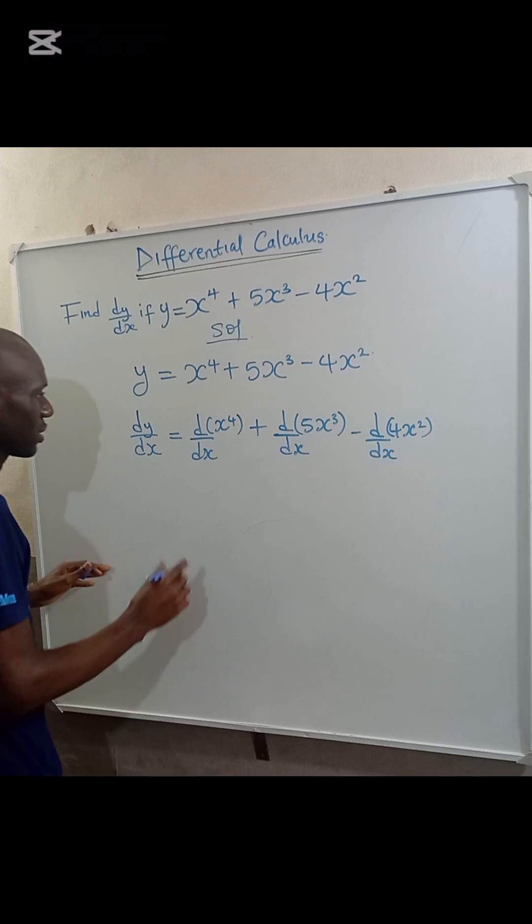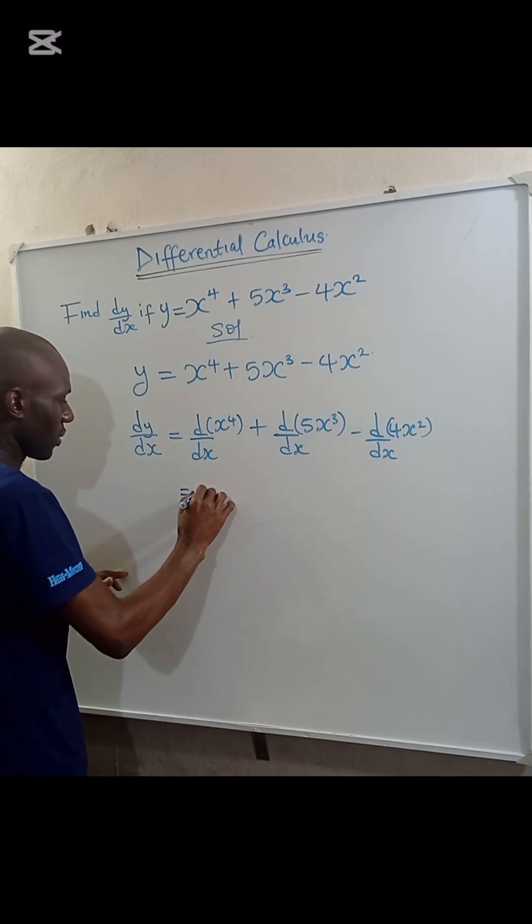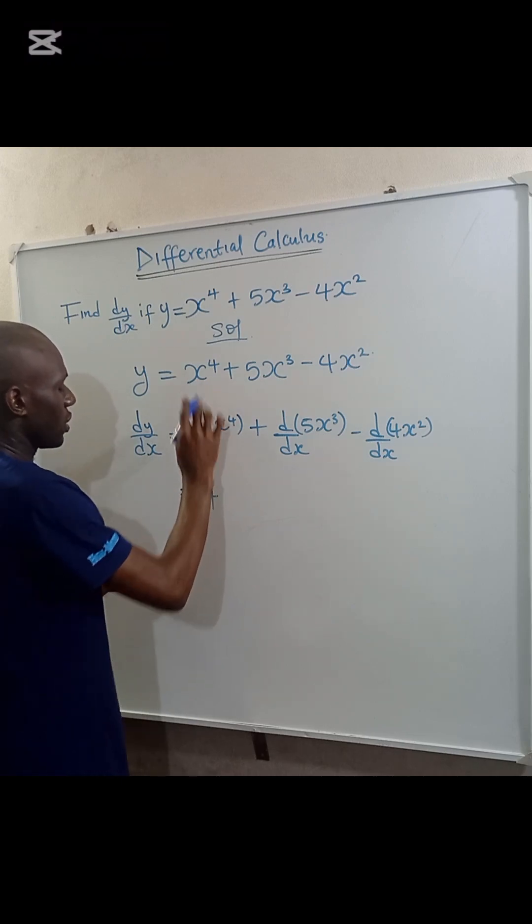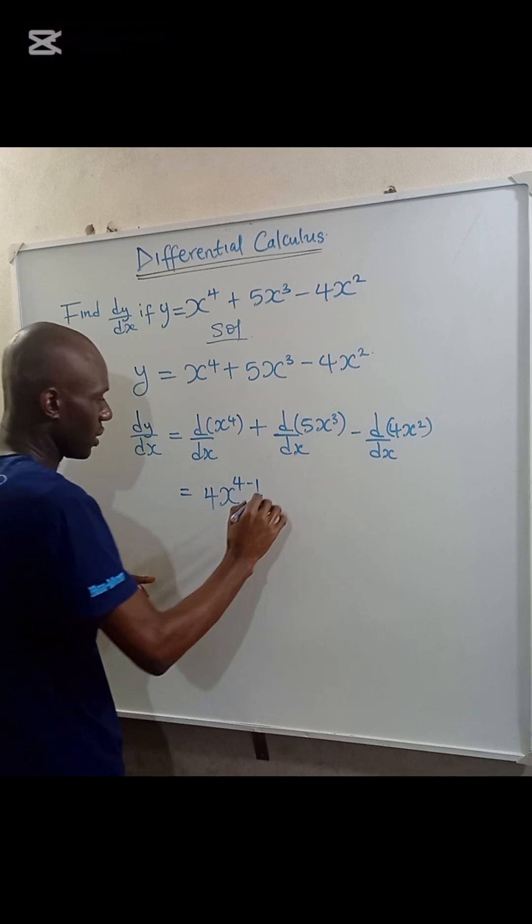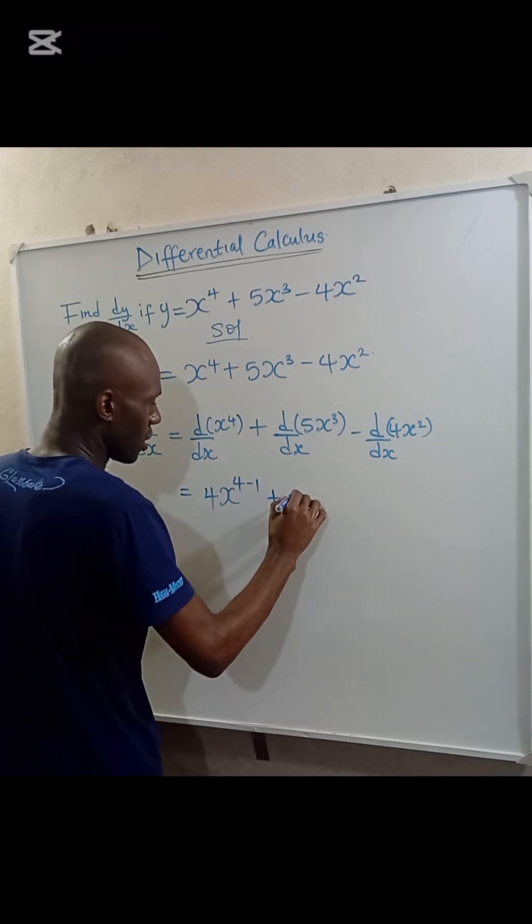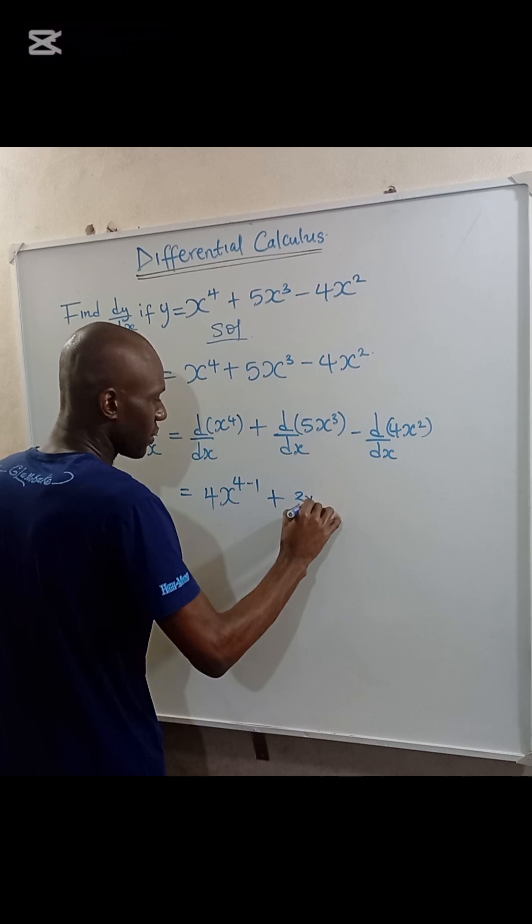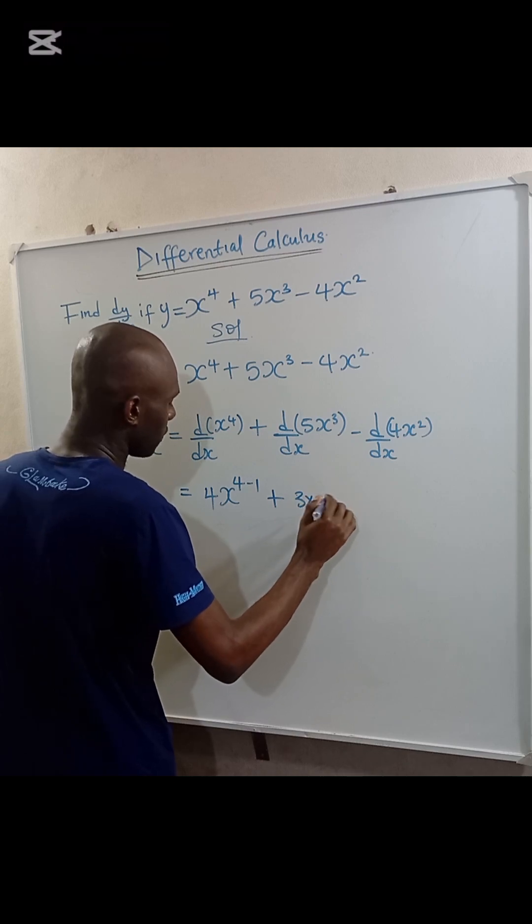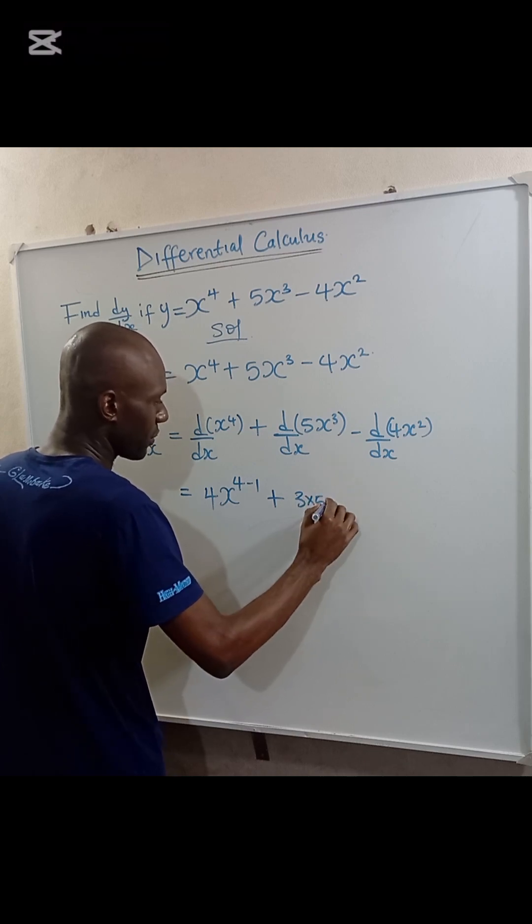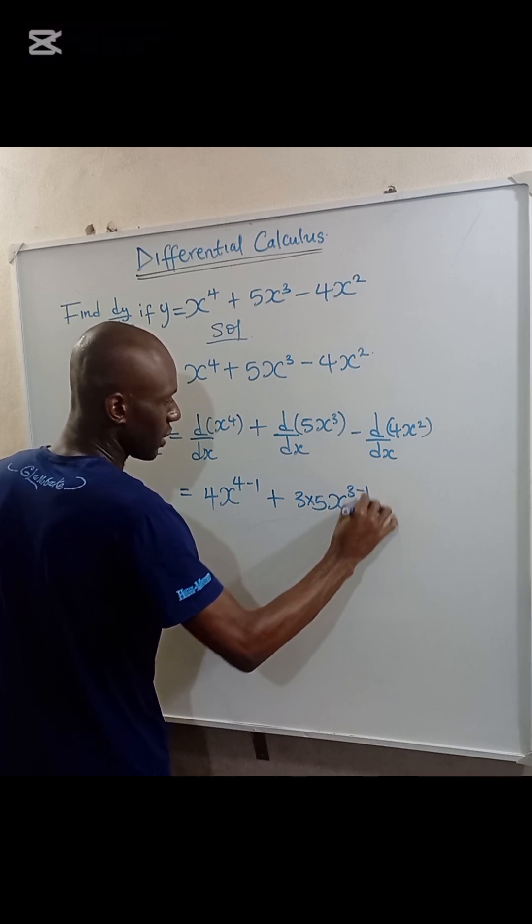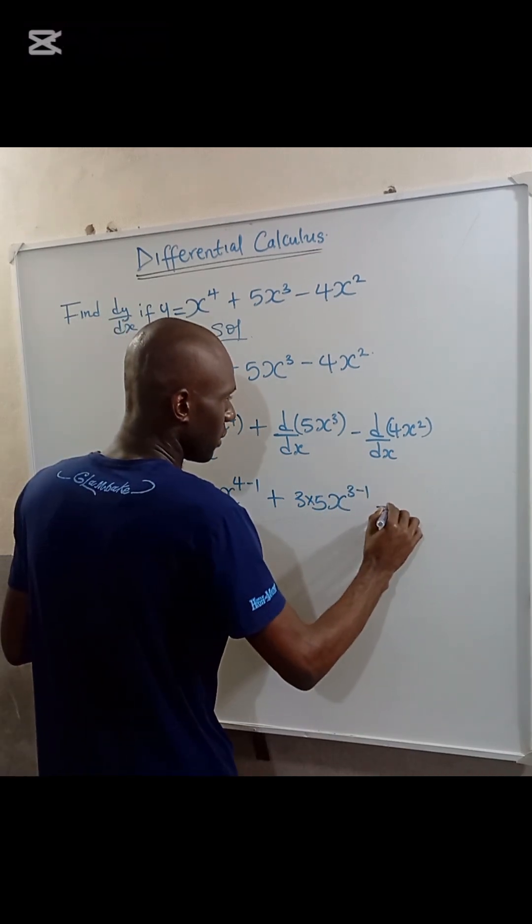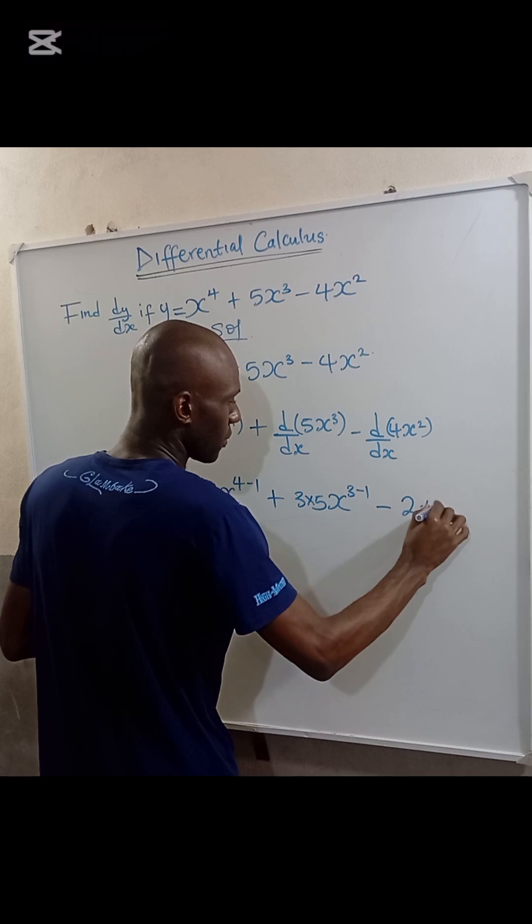This can be simplified as 4 multiplied by x to the power of 4 minus 1, plus 3 times 5 multiplied by x to the power of 3 minus 1, minus 2 times 4 multiplied by x to the power of 2 minus 1.